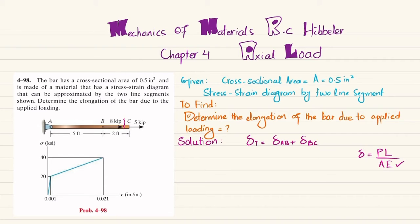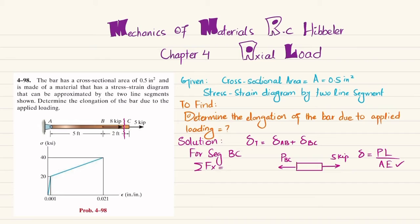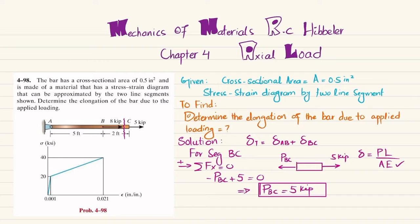First, we cut member BC and draw the free body diagram. For segment BC, we have a 5 kips load at point C. To balance it, we have the internal force P_BC. Using the equation of equilibrium — sum of all forces along the x-direction equals zero, with rightward forces positive — we get: negative P_BC plus 5 equals zero, so P_BC equals 5 kips.